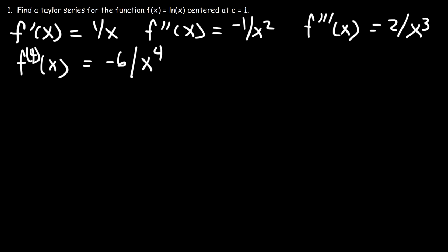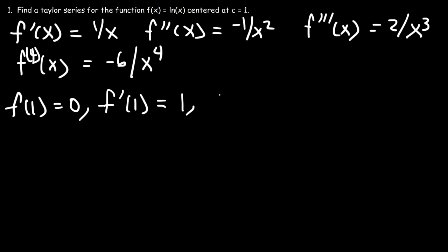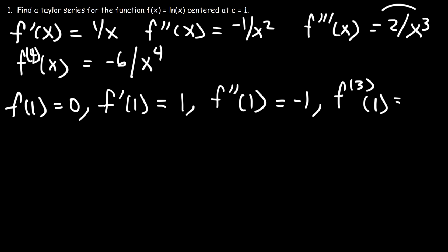Next, we evaluate the function and its derivatives at c = 1. f(1) = ln(1) = 0. f'(1) = 1/1 = 1. The second derivative evaluated at 1 is negative 1 divided by 1 squared, which is negative 1. The third derivative at 1 is positive 2. And the fourth derivative when x = 1 is negative 6 divided by 1 to the fourth, or simply negative 6.